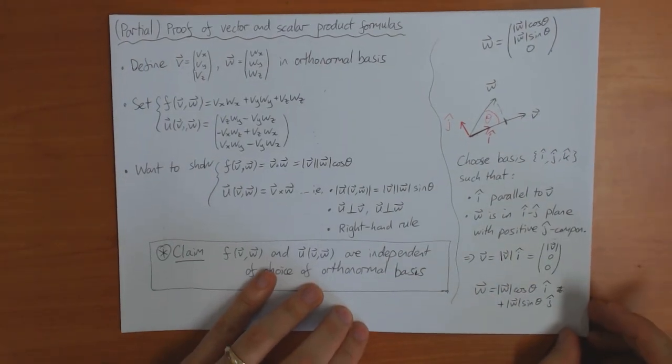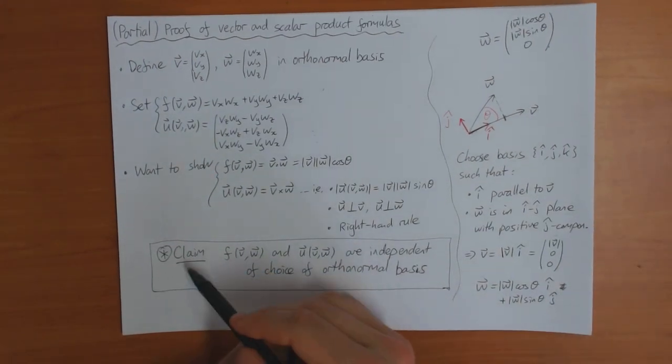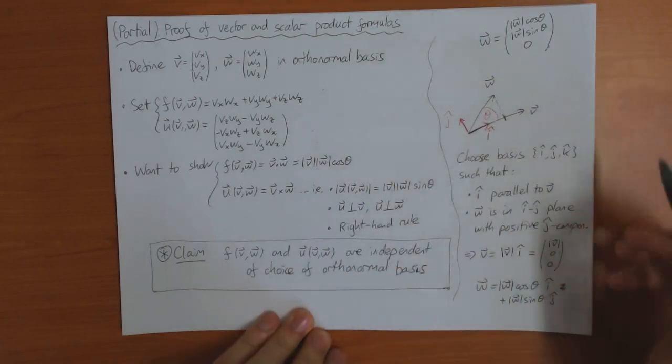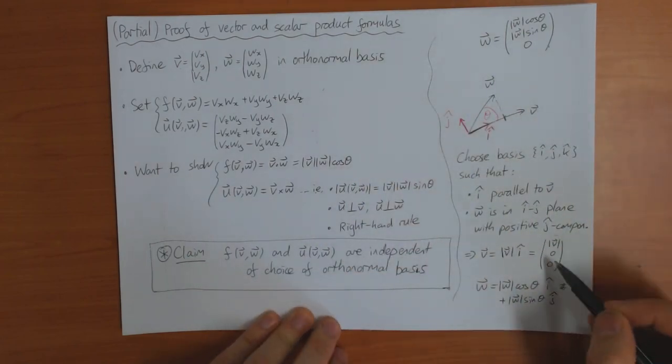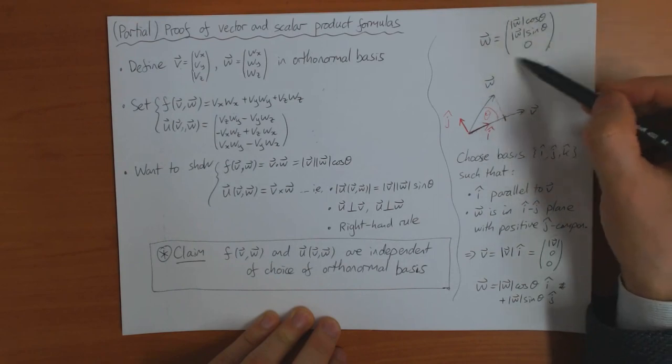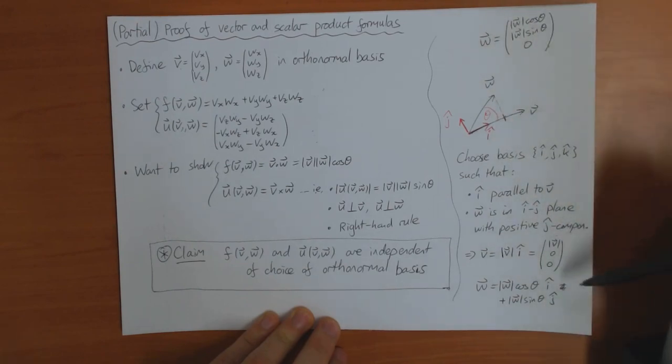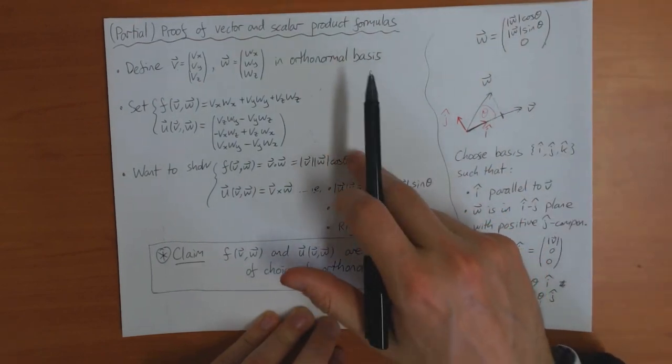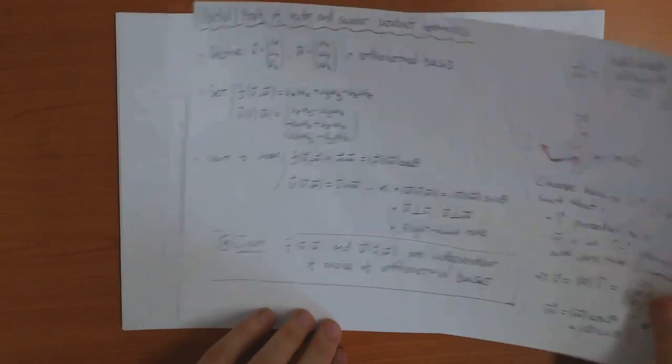So the utility, the usefulness of this claim, is it allows me to choose a basis such that I know v is equal to this and w is equal to this. And if this is true, then it's quite easy to check that these two formulas are correct. So let's do that now.